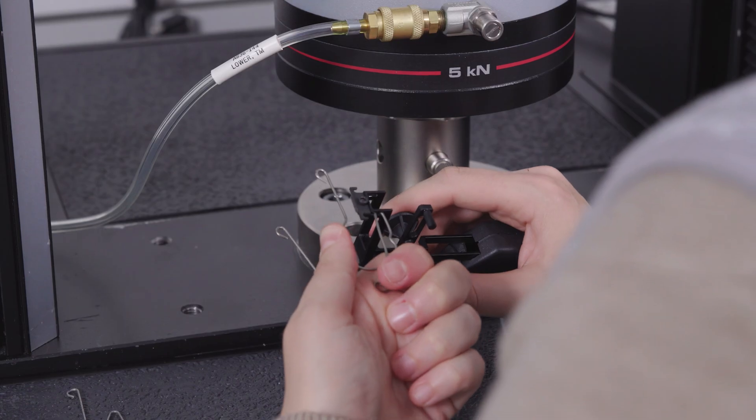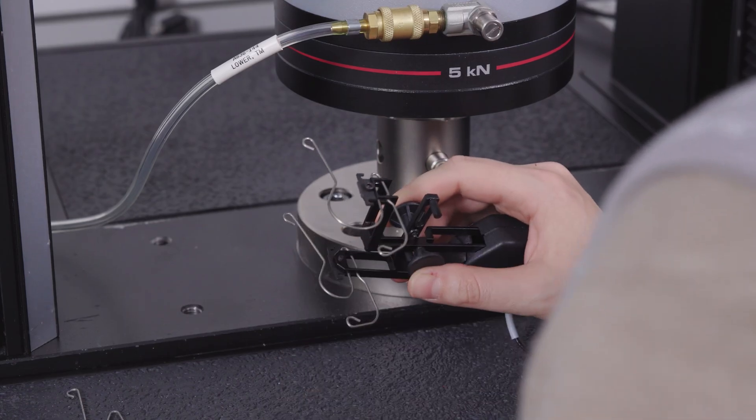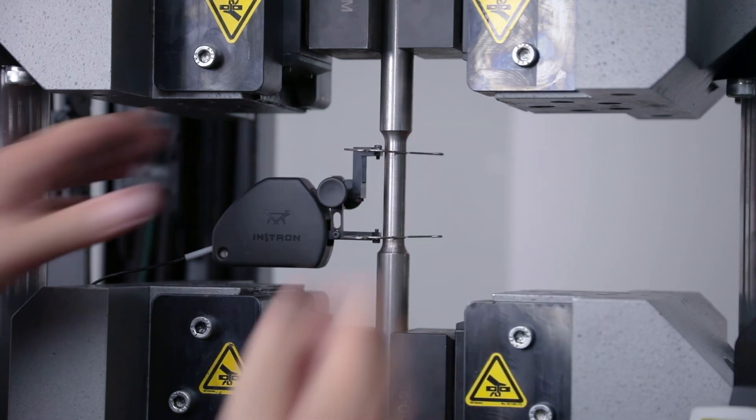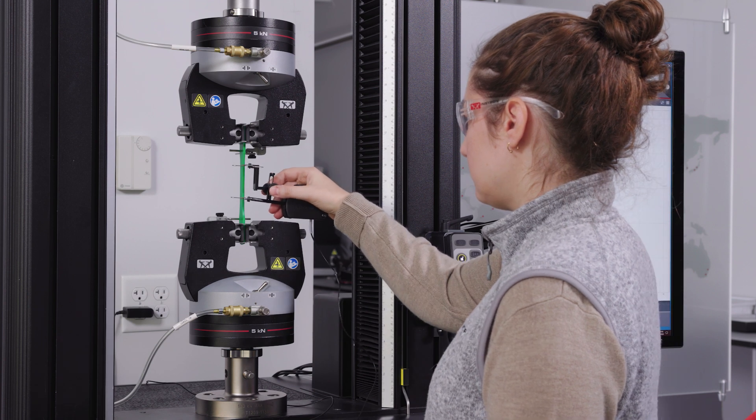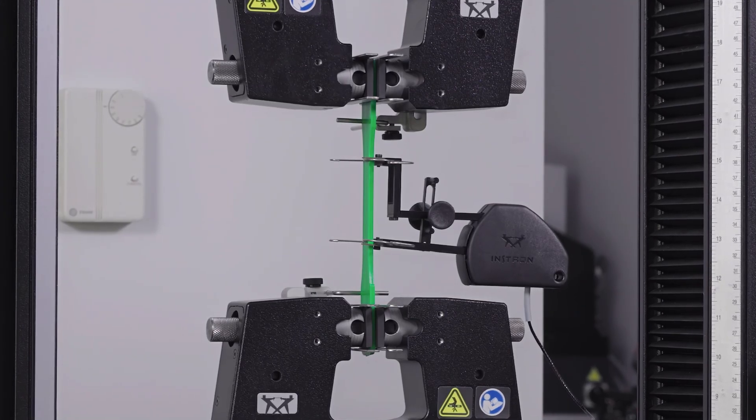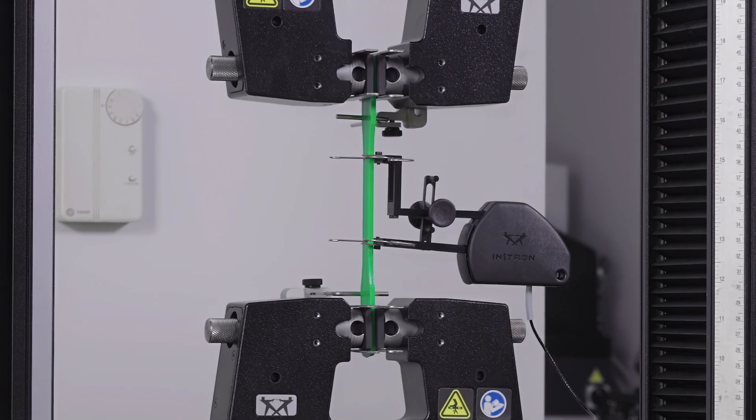The interchangeable rapid attachment spring clips make it easy to attach the extensometer to a variety of specimen geometries and sizes, while the low operating force arms reduce the possibility of knife-edge slippage when testing hard or smooth surface materials.